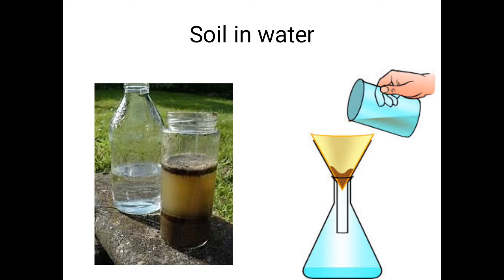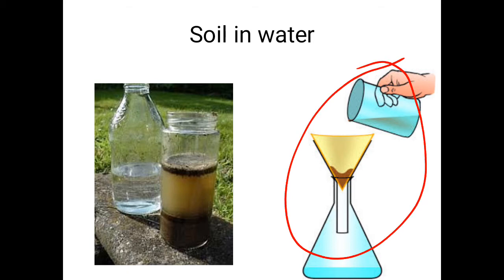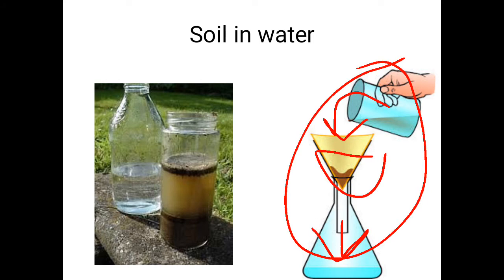Now, what happens when we mix soil in water? When we mix soil in water, it does not dissolve. So in reversible changes, after physical separating methods, the components can be separated back. The method of filtration can be used here. Soil is insoluble in water, so it can be separated from water by filtration. The mixture is poured on a filter paper, and the liquid water passes through it and is collected in a conical flask — called the filtrate. The solid soil collected on the filter paper is called the residue.